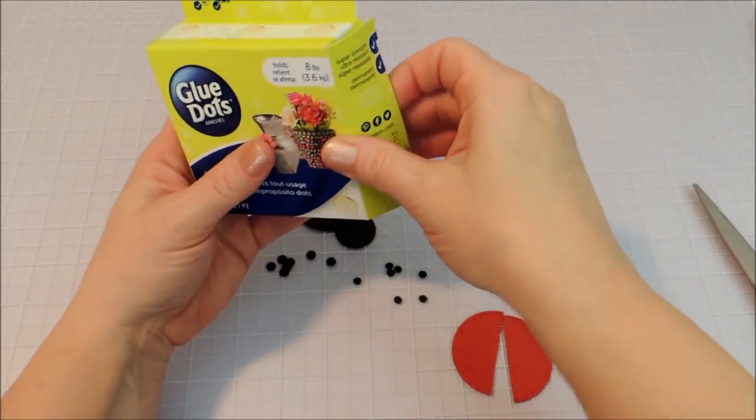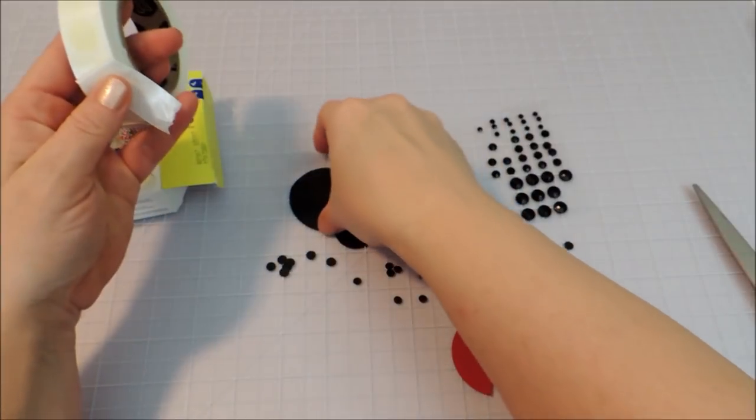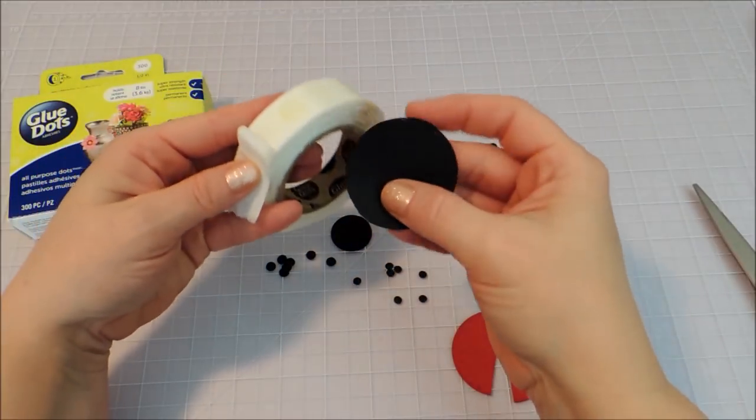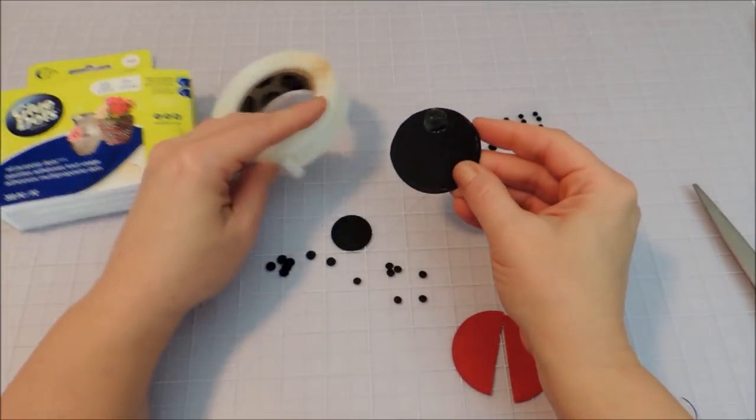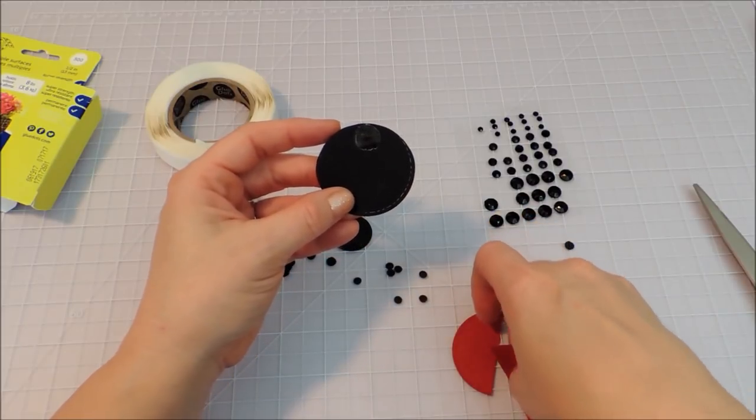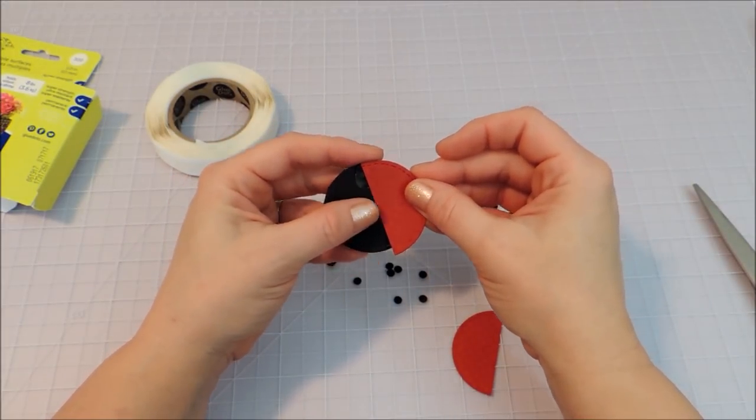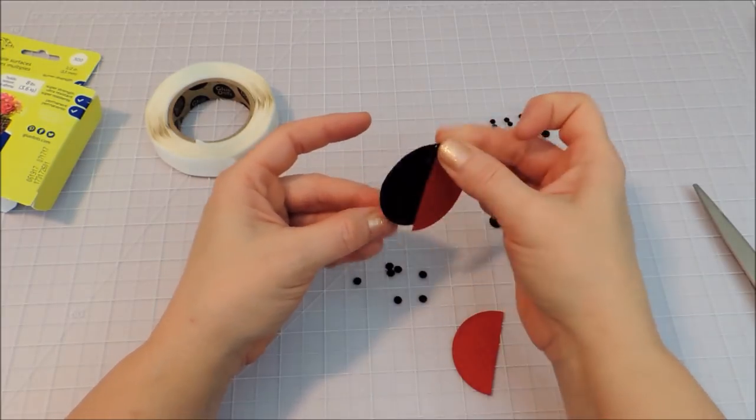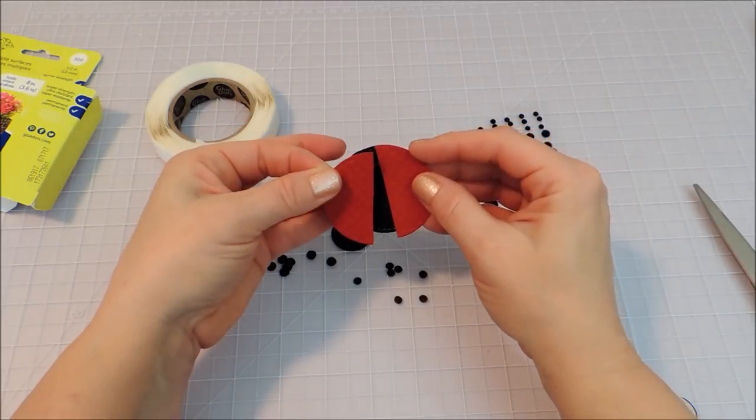So now I'm going to use some of my glue dots. And I'm just going to put one at the top of my ladybug there on my edge that I trimmed. And I'm just going to put that on there, a little bit offset so that it looks like the wings are opened.